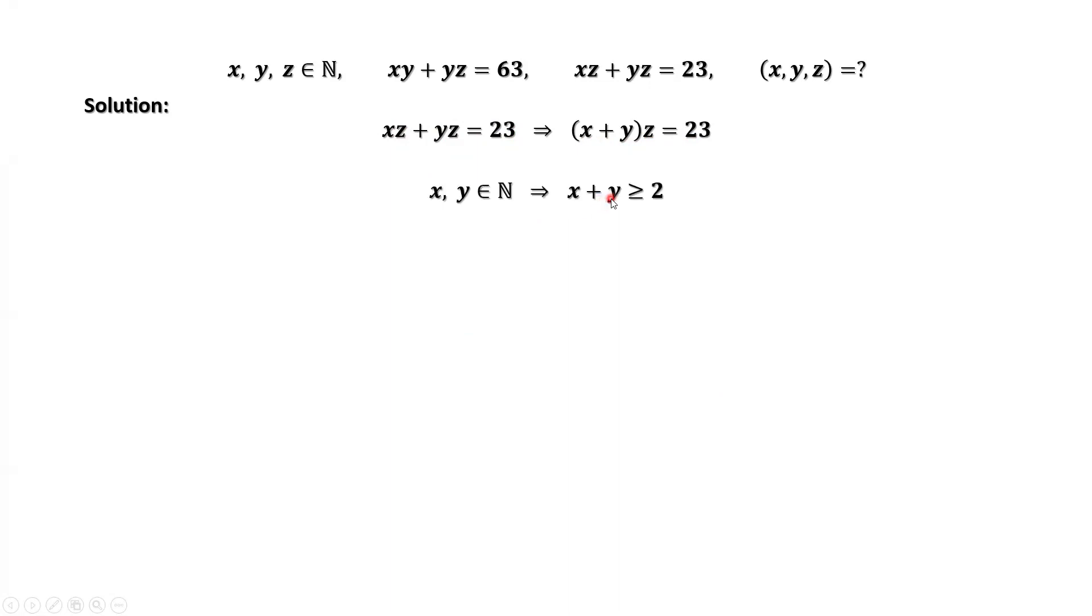x plus y is greater than or equal to 2 because x and y are positive integers. 23 is a prime number. Therefore, from the left-hand side, we have z equals 1 and x plus y equals 23.